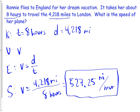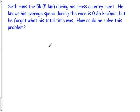Okay? Our next one, we're going to have to solve for a different variable. Okay? Seth runs the 5k, which is 5 kilometers, during his cross-country meet. He knows his average speed during the race is 0.26 kilometers per minute, but he forgot what his total time was. How could he solve this problem? By using cues, Seth. By using cues.